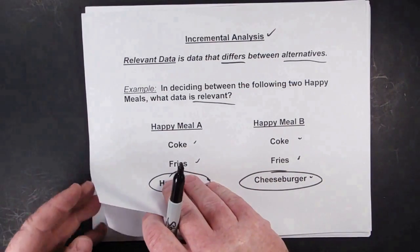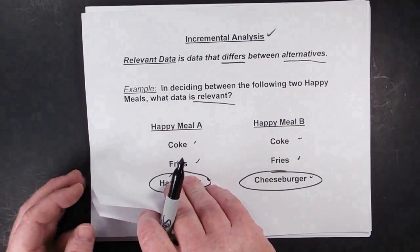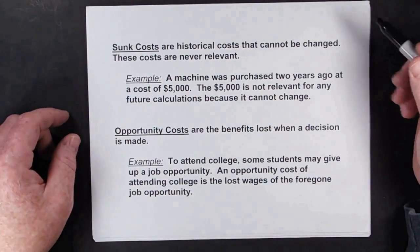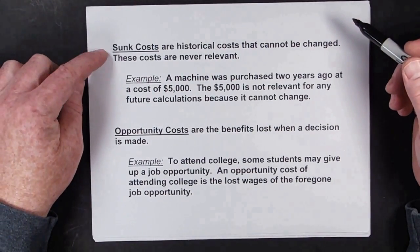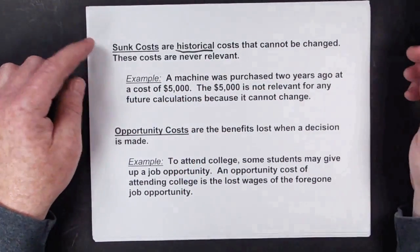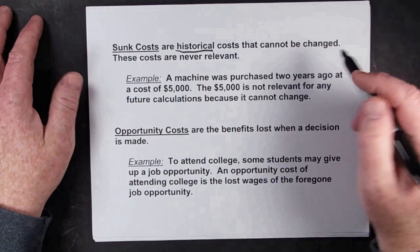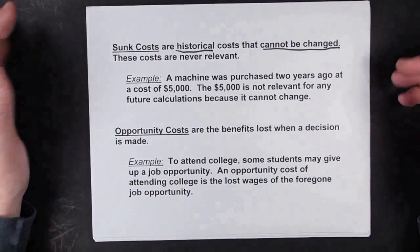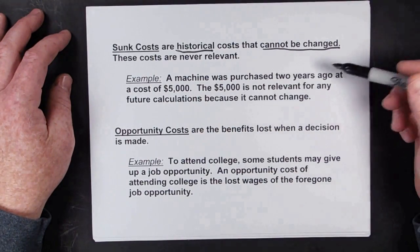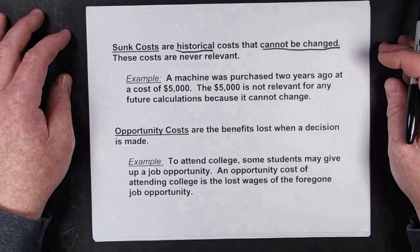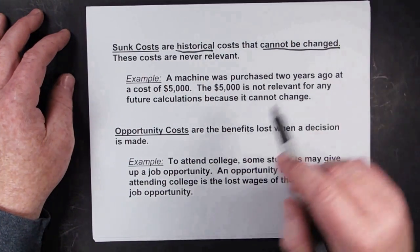A couple of other types of costs: some costs are historical costs that cannot be changed — these costs are never relevant. Historical costs — what you paid for something in the past — are not relevant because they can't be changed in the future. A machine purchased two years ago at a cost of $5,000: that $5,000 is not relevant for any future calculations because it cannot be changed.